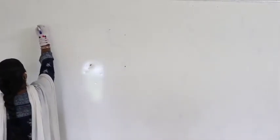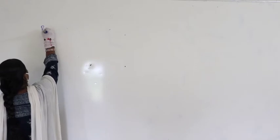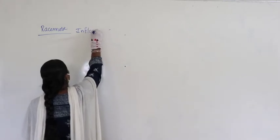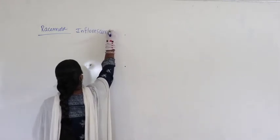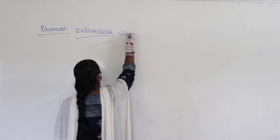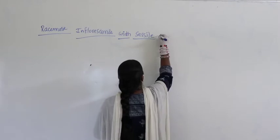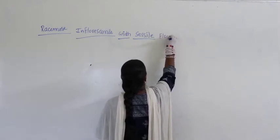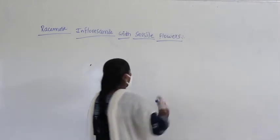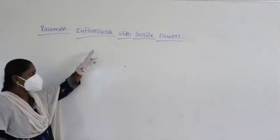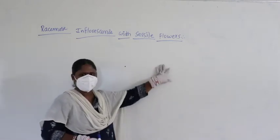Hello students, we were discussing about inflorescence. We are in the discussion about racimose inflorescence. Let us discuss the second category — racimose inflorescence with sessile flowers. Here we have discussed about racimose inflorescence with pedicillate flowers in the last class.